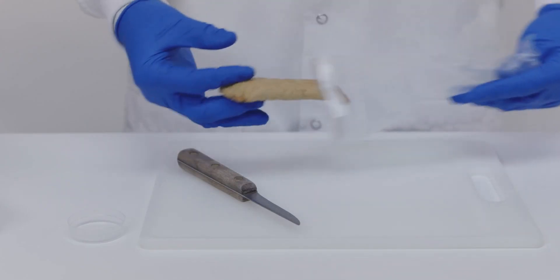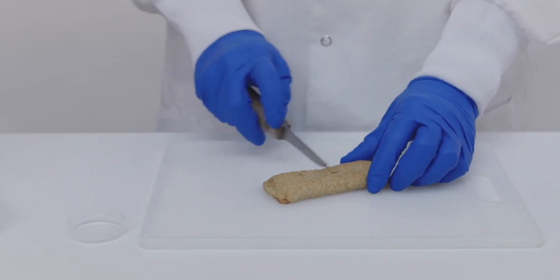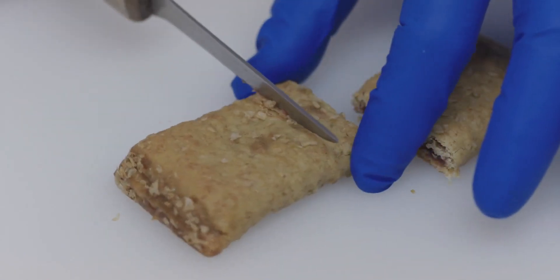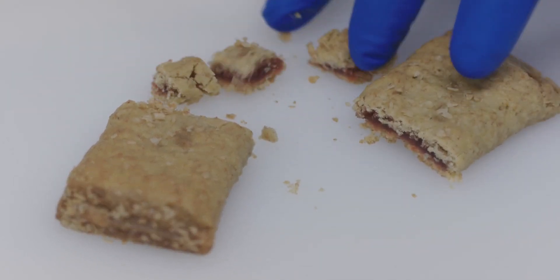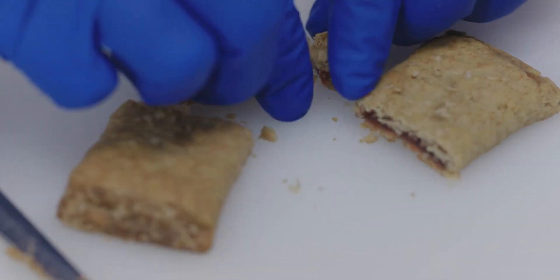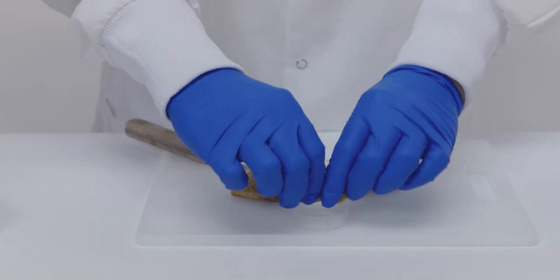If it's a multi-component product like filled cake, cheese and crackers, or cereal with fruit, get a representative sample. By representative, we mean that all the components of the product should be represented in the same ratio as they are in the actual product.